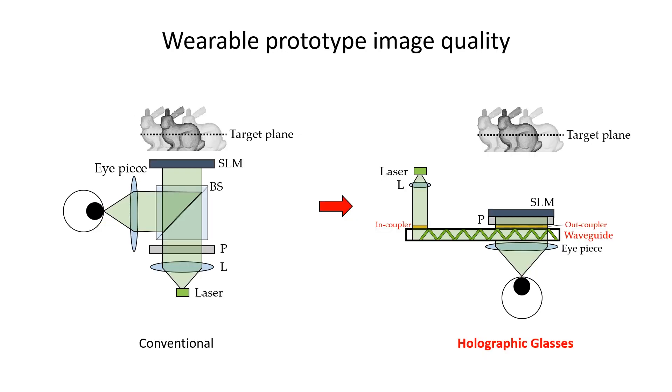Last question, why is the wearable prototype image quality so bad? To answer this question, let's go back to this diagram. The beam splitter in a conventional holographic display system gives you a nearly plain wave, which is good because we don't have to think about the input phase profile.